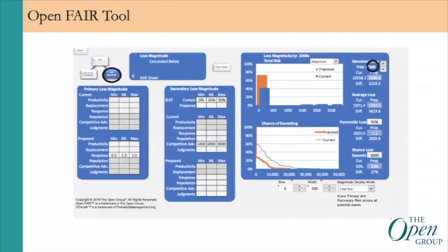We're going to be using the OpenFAIR tool, which is built on an Excel spreadsheet. On the left-hand side is where the data can be input — both the current circumstance as well as the estimates for the proposed circumstance. The right-hand side shows the final risk analysis. Of particular note, we'll be doing 100 trials, essentially simulating 100 years of experience for this particular analysis.